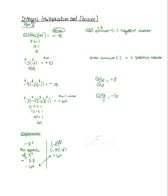I would much rather have positive sixty-four dollars in my account than negative sixty-four dollars, so make sure you pay attention to that. Exponent rules apply across the board too. If I had negative one to the seventieth power, is that exponent even or odd? If the exponent is even, you're going to get a positive answer; if it's odd, you're going to get a negative. Negative one times itself seventy times is still going to be one, because one times one times one, et cetera, is always going to give you one.